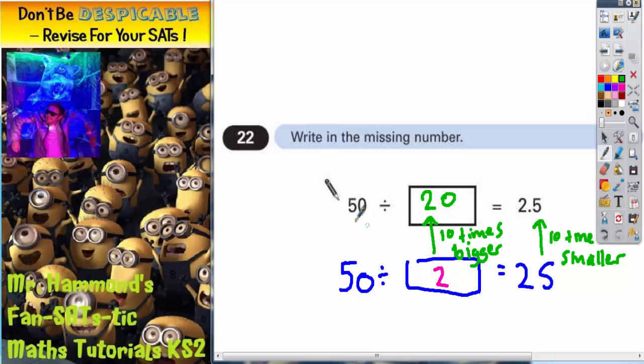And that is correct. 50 divided by 20 is 2.5. One way of checking this would be to say 50 divided by 20. When you're dividing, one zero on the 20 can cancel out one zero on the 50. So you're just actually left with 5 divided by 2, which is 2.5.